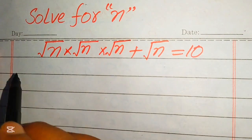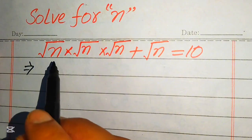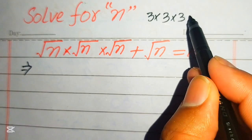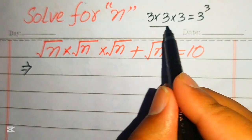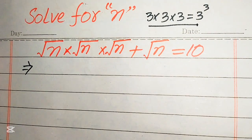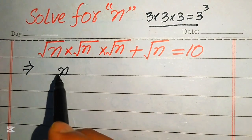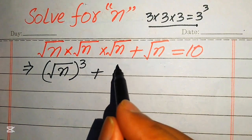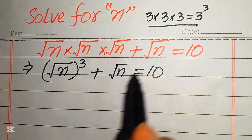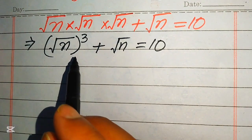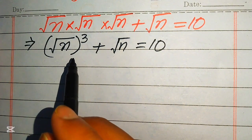Here you see that n is multiplied 3 times. You know that if any value is multiplied 3 times, we write it as cubed. According to this rule, we write our left-hand side as square root of n, whole cubed, plus square root of n, and this whole equation equals 10. Now in the next step we need to convert this radical equation into cubic form.